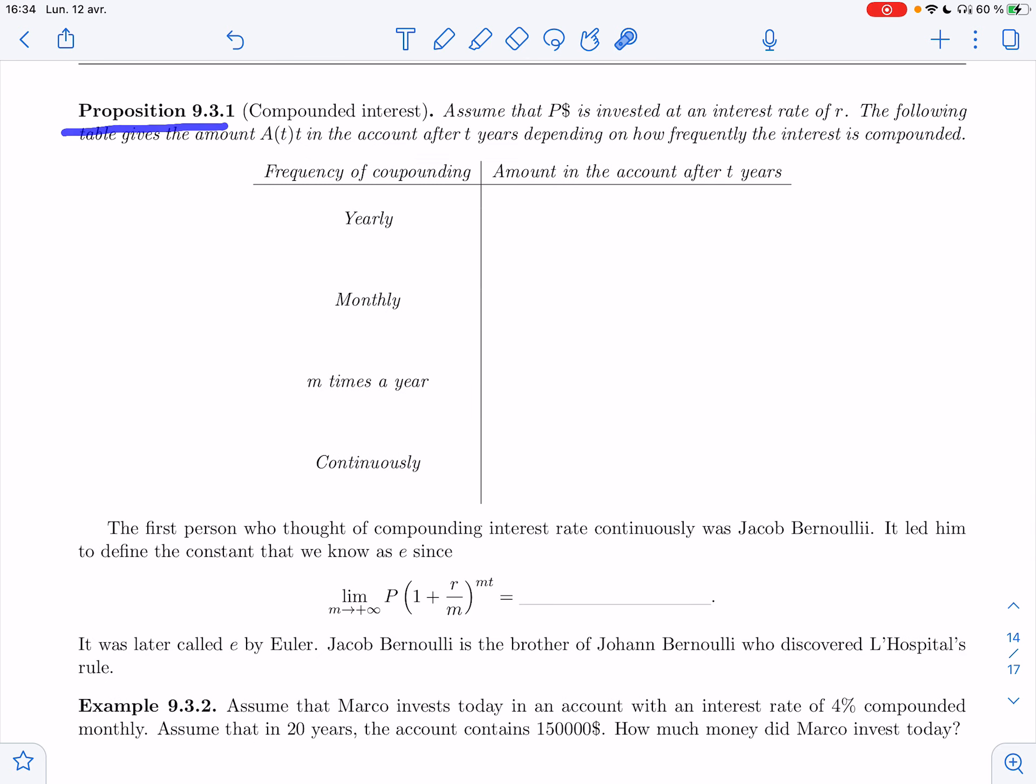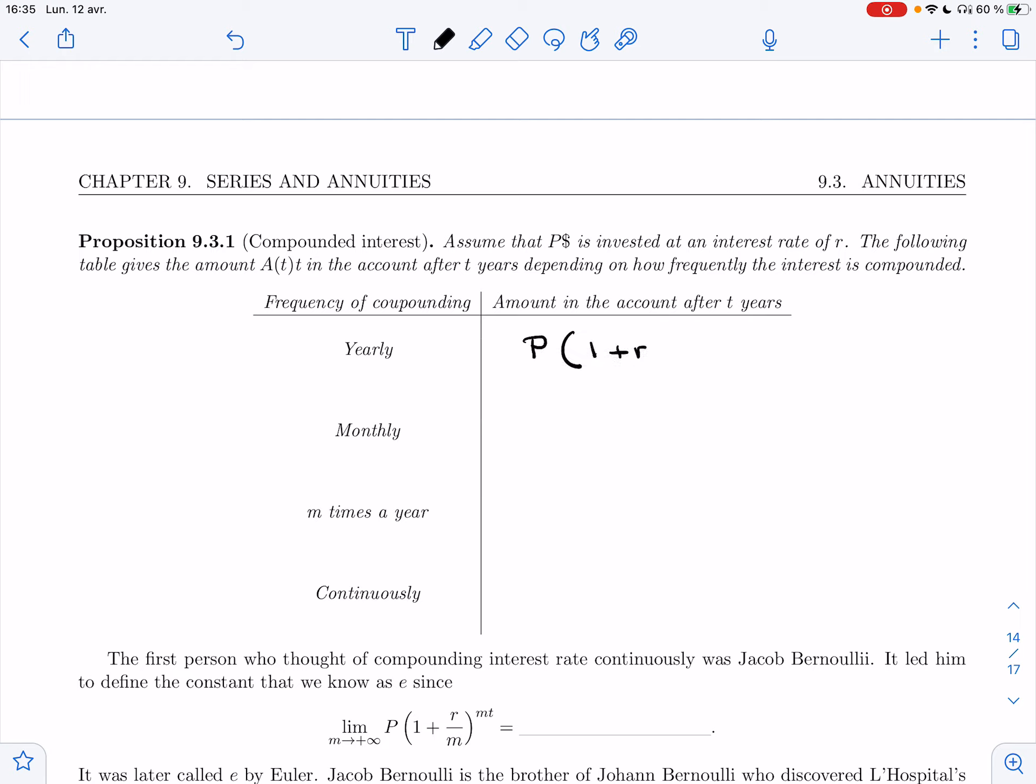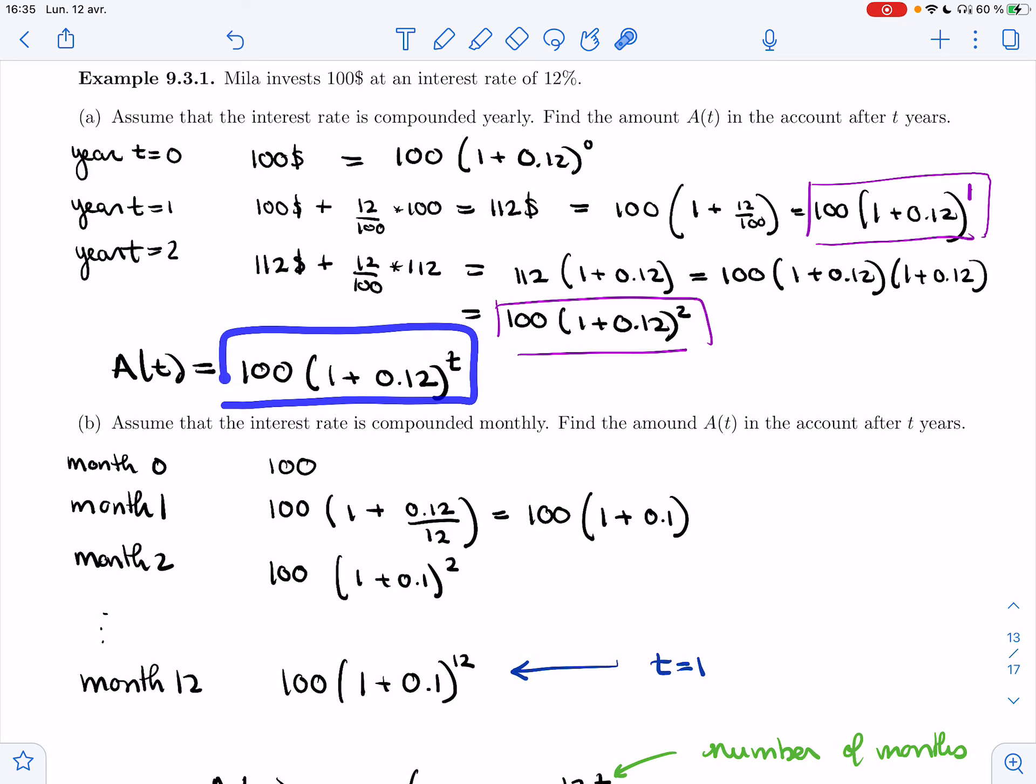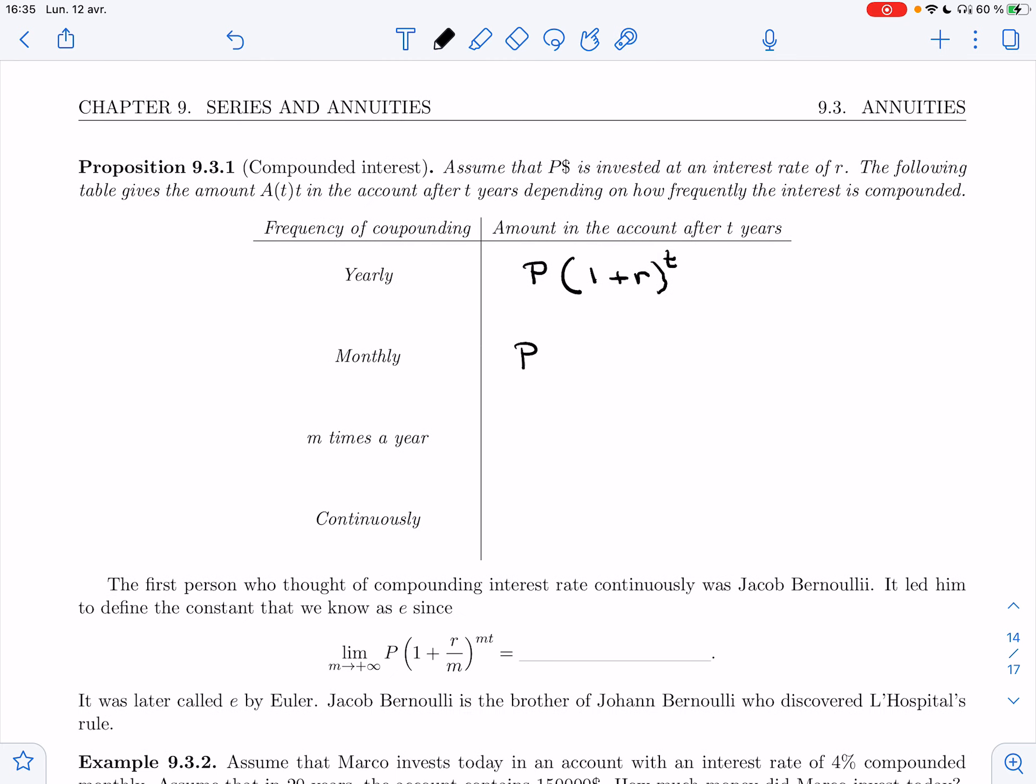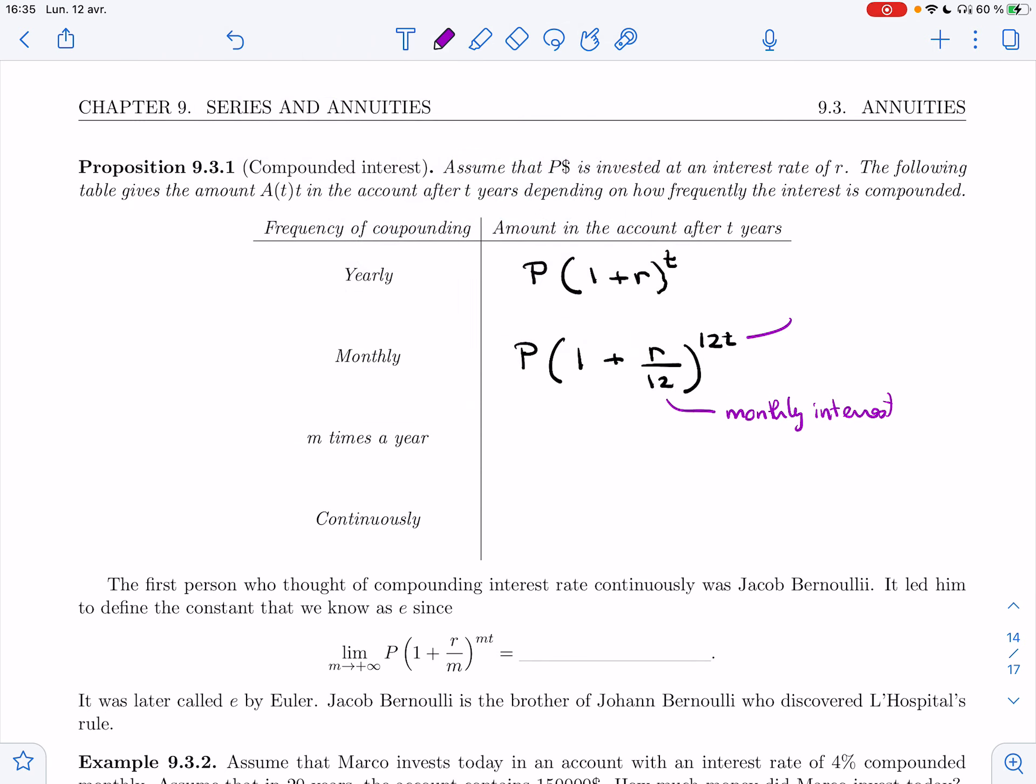So proposition 9.3.1, compounded interest. Assume that P dollars is invested at an interest rate of R. The following table gives the amount A(t) in the account after t years, depending on how frequently the interest is compounded. So in this column, I have frequency of compounding. And in this column, I have amount in the account after t years. So if it's compounded yearly, that was our first example, we take the amount and then we take 1 plus R and we raise that to the number of years. Alright, so this is what we found right here. For monthly, which was the second example, we first divide the interest by 12 to get the monthly interest. And then we raise it to the power of 12t, which is the number of months in t years.